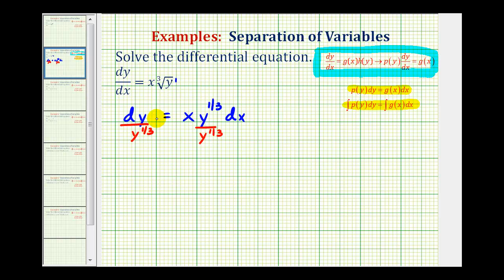And now when I simplify this, I'm going to move this up into the numerator which is going to change the sign of the exponent. So we'll have y to the negative one-third dy equals x dx.